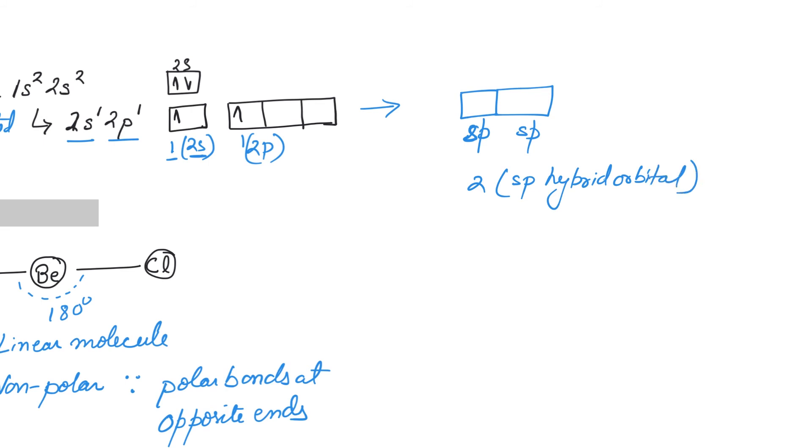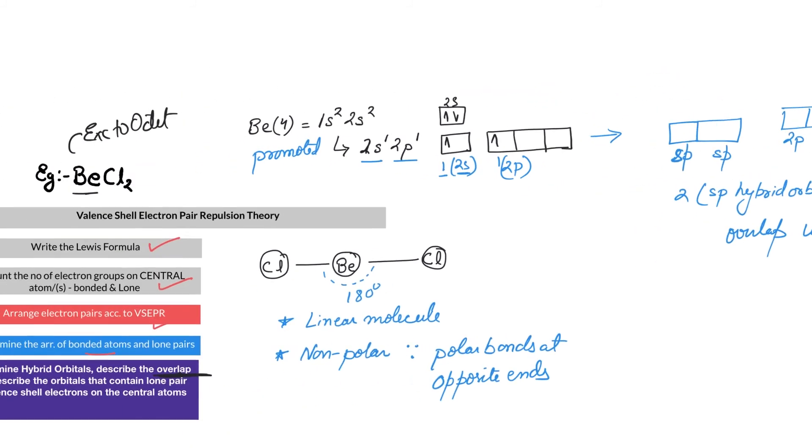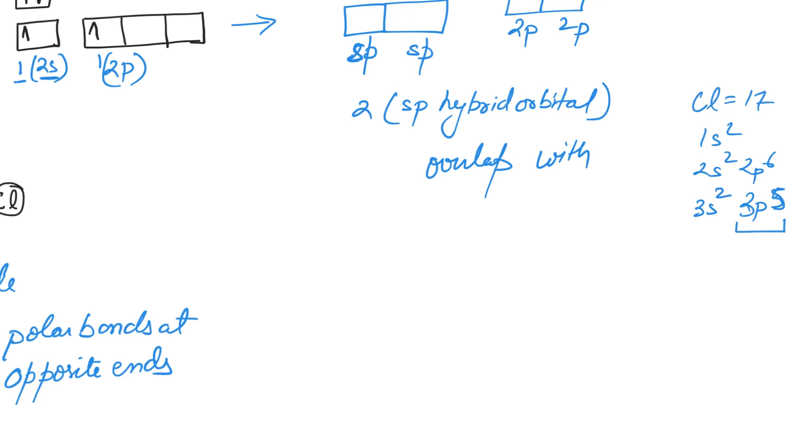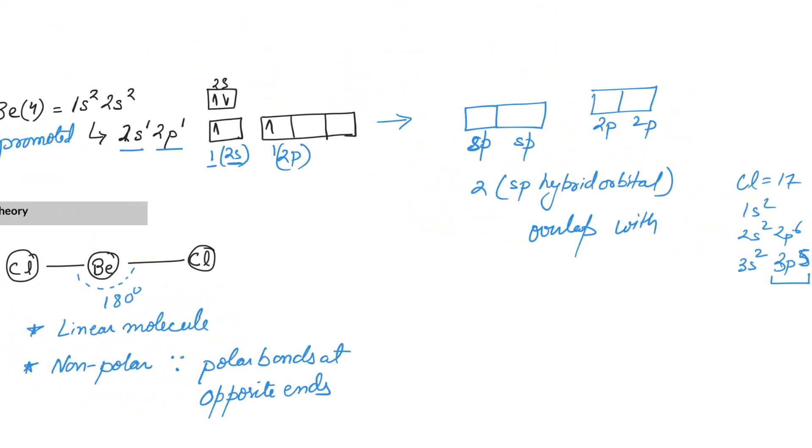The remaining are going to remain the same. Now these sp orbitals are going to combine or overlap with the Cl. Chlorine, if you remember, is 17: 1s² 2s² 2p⁶—that's 10. Next is 3s², that's 12, then 3p⁵. They have to overlap with the 3p orbital.